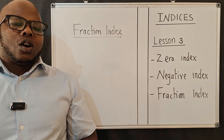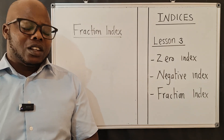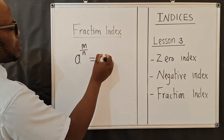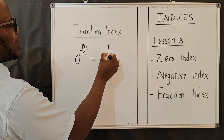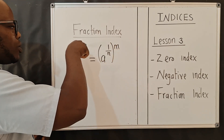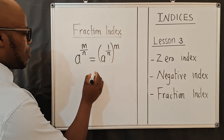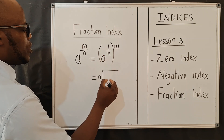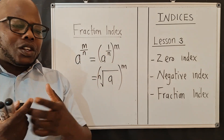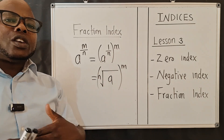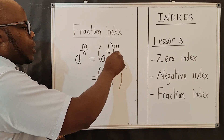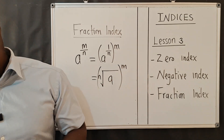For fractional indices, here's what you need to understand. When you've got a to the power m over n, this equals a to the power one over n, all raised to the power m. From this you can write: the n-th root of a, raised to the power m. A fractional exponent means a root — the denominator n represents the root, and that's why you write n under the root sign. The numerator m stays as the power.